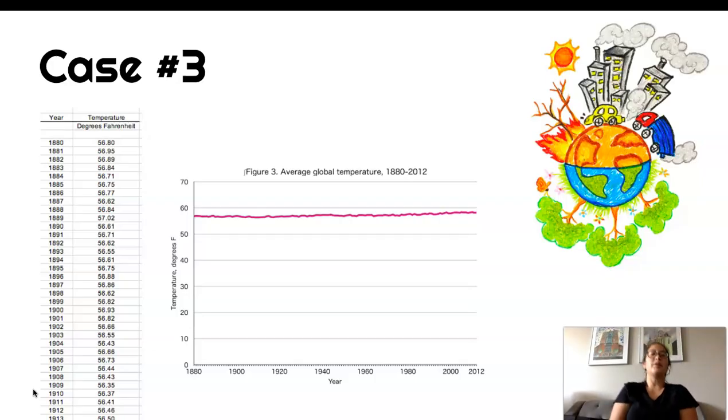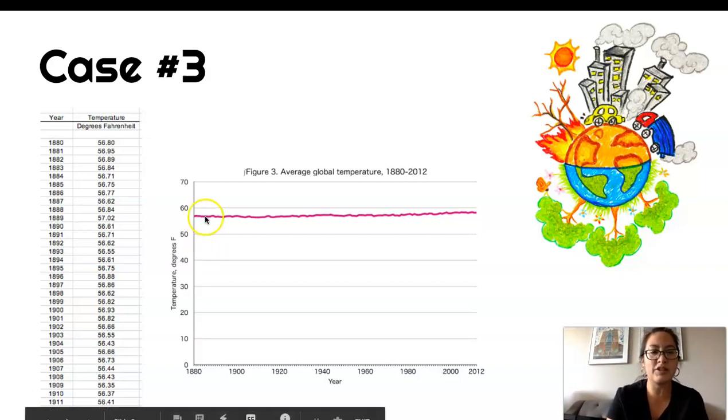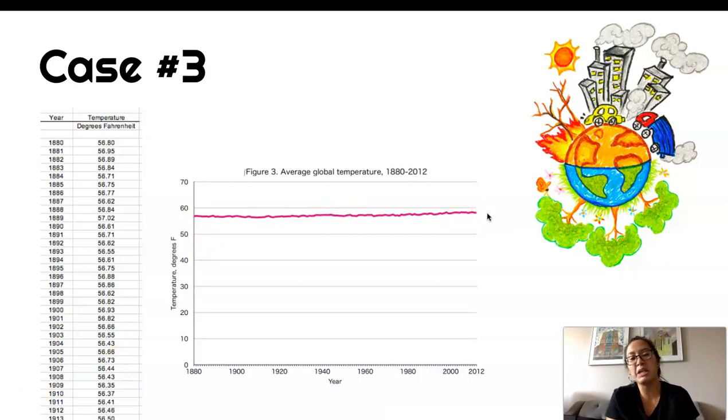All right, so let's look at this graph. This is a graph of the average global temperatures for the last give or take 150, 200 years right from 1880 to about 2012. And if we're looking it doesn't look like it's changed very much. So if you were looking at this graph you might not be super impressed with the change in the average global temperature.